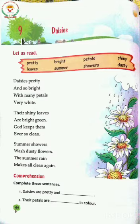Next word is Leaves — L-E-A-V-E-S. Leaves means jo pati hoti hai, green color ki, use bolte hai. Next word is Summer — S-U-M-M-E-R. Summer means Garmy.